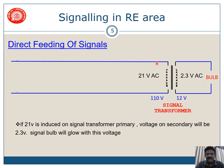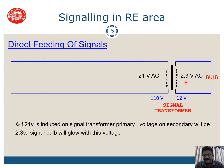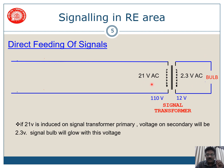In diode feeding of signals, if 110 volts is given the output will be 12 volts. But if the input is 21 volts AC from some foreign feed, then 2.3 volts is the secondary output and the bulb will glow. The ECR may not pick up, but the bulb will glow which is unsafe. Hence our signaling system shall be such that the voltage on the primary side shall be less than 21 volts.